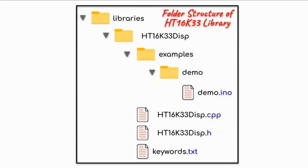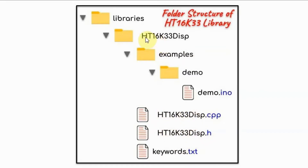This diagram shows the folder structure for the HD16K33 library. Within the Arduino libraries folder, we create our folder for the library, which is named HD16K33Display. Inside this folder, we create the examples folder, and the files: source file, header file, and the keywords file. The names of the source file and the header file must be the same as the name of the library folder. Within the examples folder, we create subfolders which will contain our example sketches.